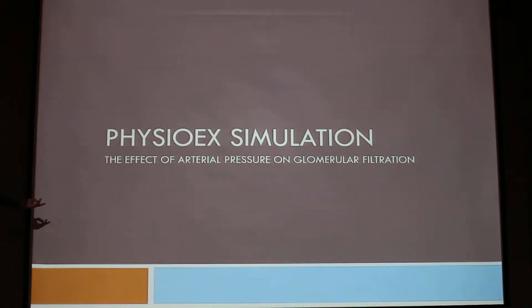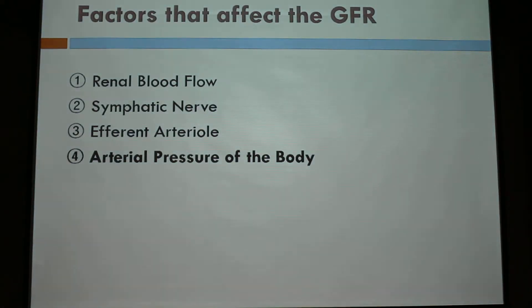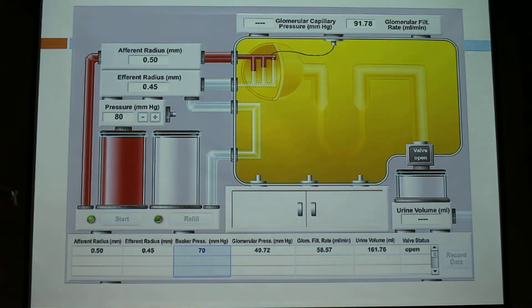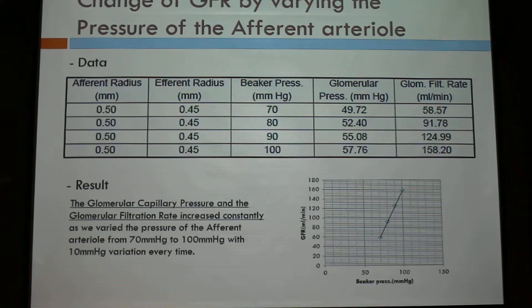We did a PhysiWeb simulation to tell you more about the last one — arterial pressure of the body. We made a model titled 'Effects of Arterial Pressure on Glomerular Filtration.' There is an afferent arteriole and efferent arteriole, and we can measure the pressure of the afferent arteriole, and there is the glomerulus and glomerular capsule. We fixed the afferent and efferent radius, and varied the beaker pressure — meaning the arterial pressure — by 10 mmHg every time, from 70 mmHg to 100 mmHg.